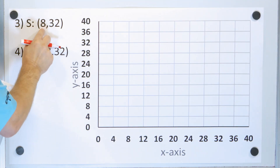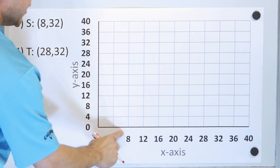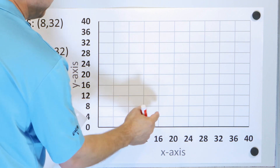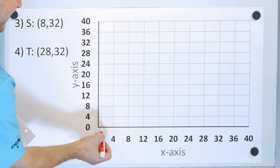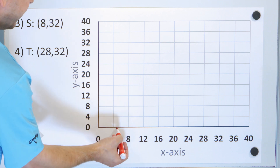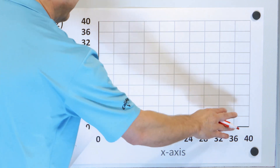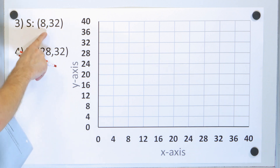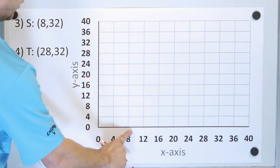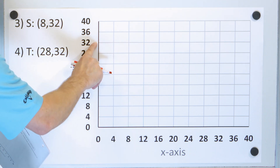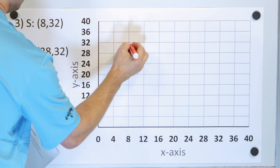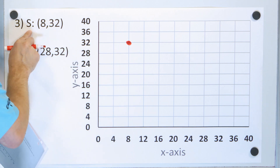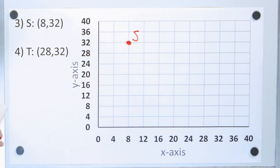Next point is S at 8 comma 32. Notice I have larger numbers here — I'm counting by 4, so it's 4, 8, 12, 16. But don't forget, between 0 and 4 it's 1, 2, 3, then 4, and all the numbers are still there. The first value is 8, so x equals 8, which is right here. Then I go up 32 units to where y equals 32, which is right here. So 8 for x and 32 for y — the label is point S.